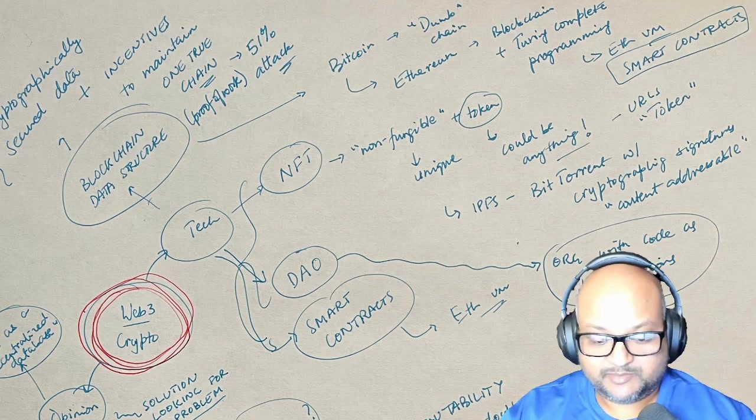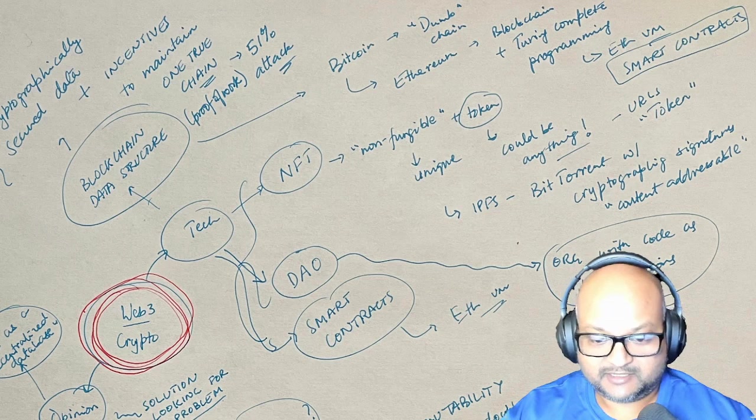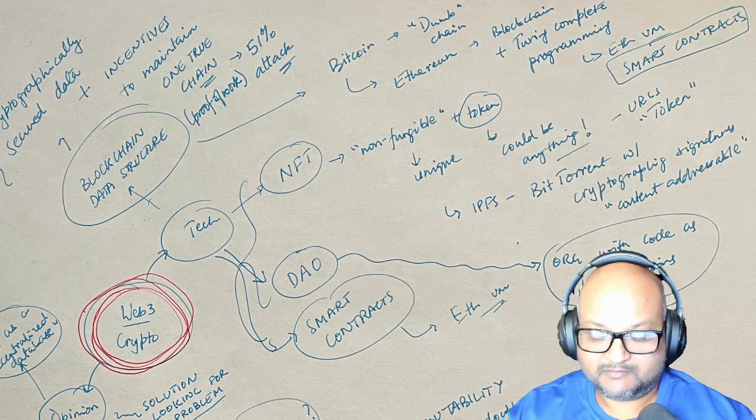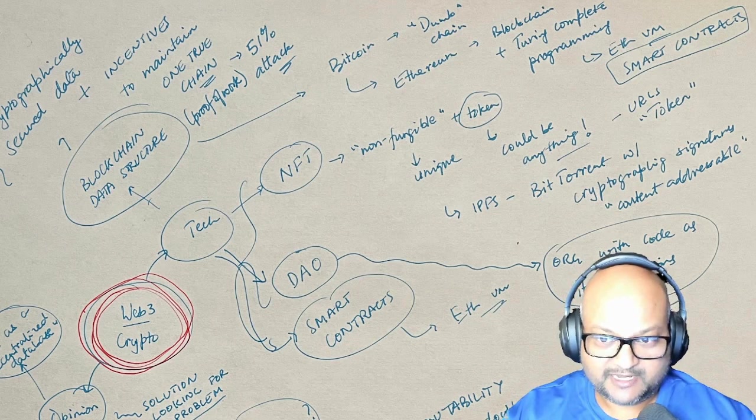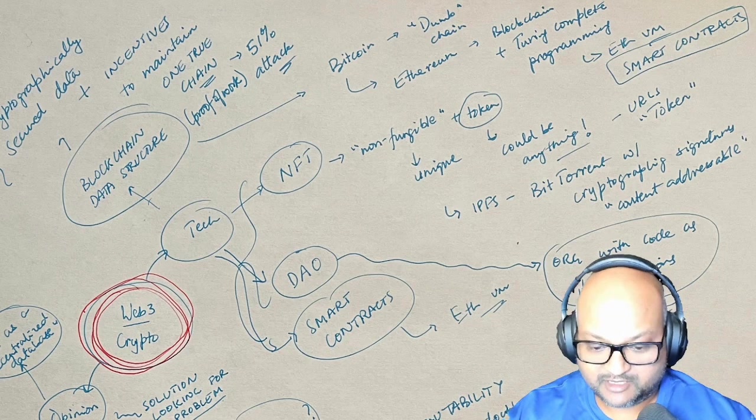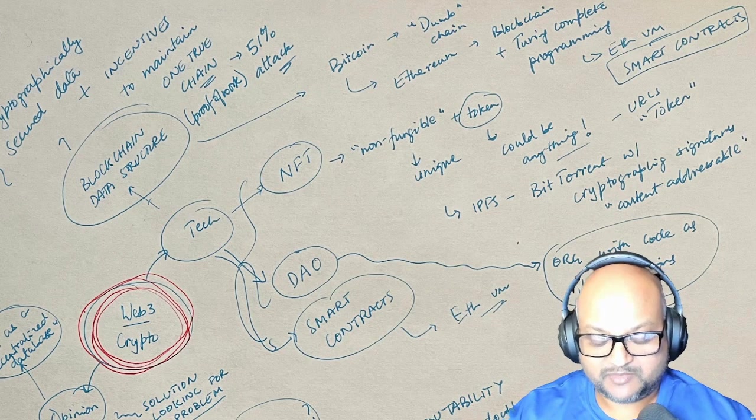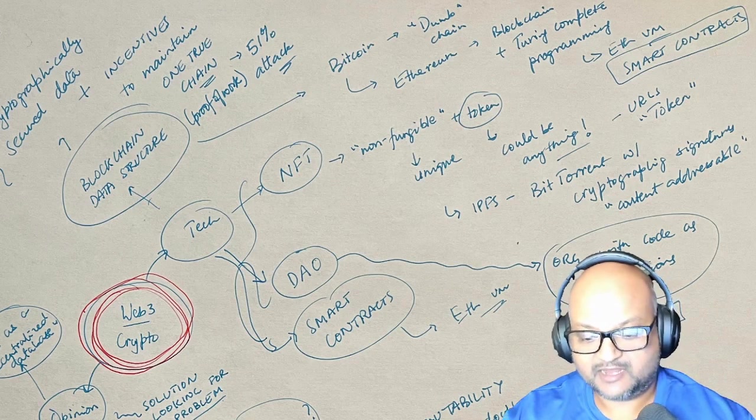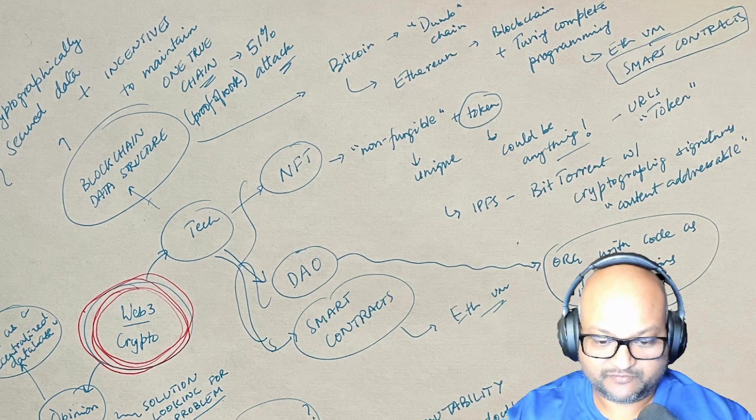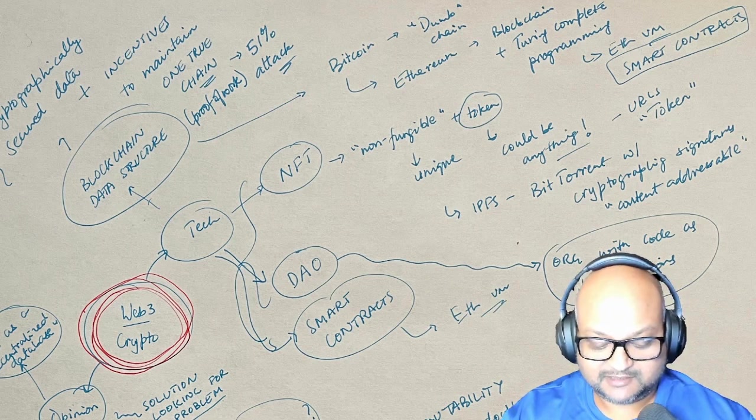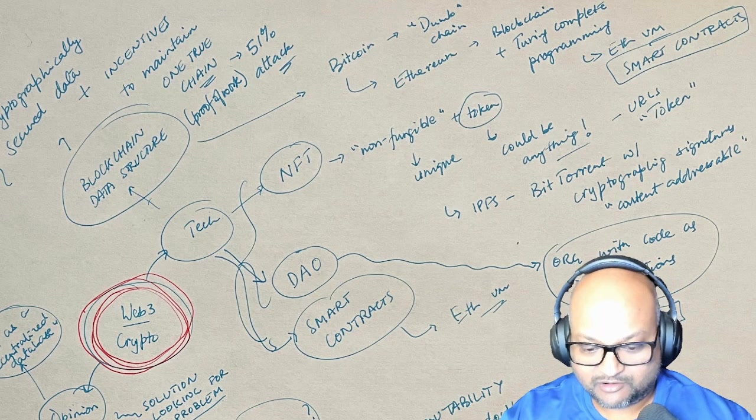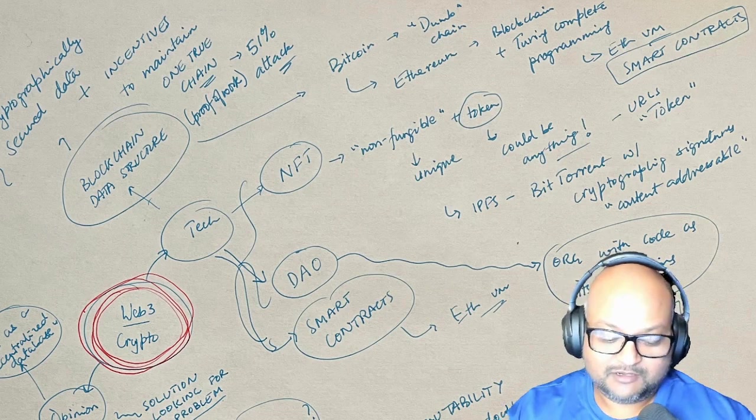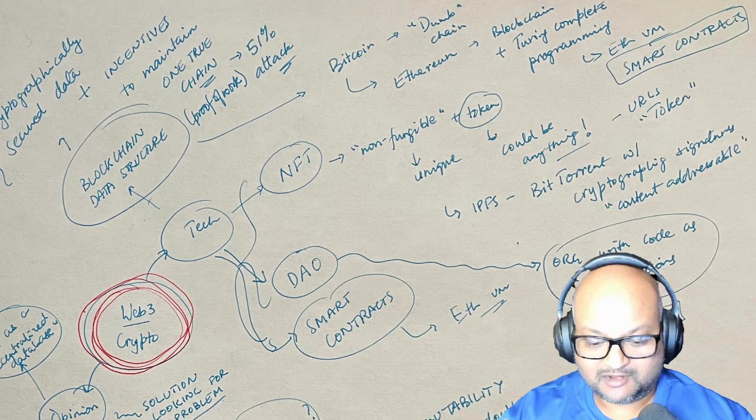A token can be any unique string. And that is what is being used for all this NFT art that is transacted on the Ethereum blockchain. What you're putting on the blockchain is not the piece of art itself, but usually it's either some sort of a URL to the piece of art or some other unique hash or identifier that can uniquely identify that piece of art. I like to think of it as similar to BitTorrent, but with strong cryptographic signatures or BitTorrent that is content addressable.